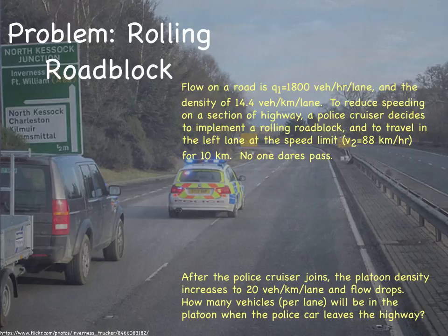This is an example. Flow on a road is Q1 of 1,800 vehicles per hour per lane, and density is 14.4 vehicles per kilometer per lane. To reduce speeding on a section of highway, a police cruiser decides to implement a rolling roadblock and travels in the left lane at the speed limit, 88 kilometers per hour, for 10 kilometers. Nobody wants to pass the police car because they would be speeding. After the police cruiser joins, the platoon density increases to 20 vehicles per kilometer per lane, and the flow drops. How many vehicles per lane will be in the platoon when the police car leaves the highway?